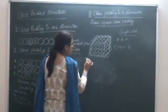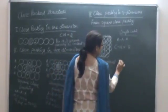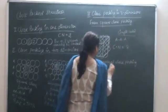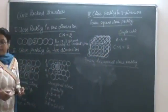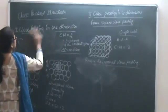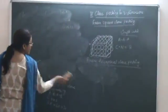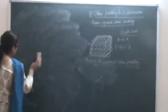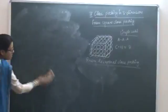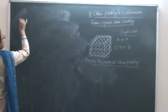The second type of arrangement comes from hexagonal close packing. When we look at hexagonal close packing in two dimensions, we get two different arrangements depending upon the type of empty spaces. So let's go on to the three-dimensional close packing from hexagonal close packing.